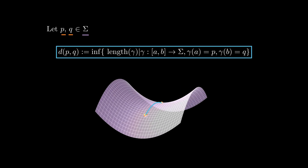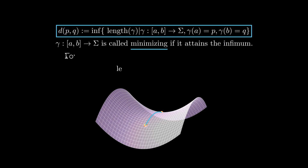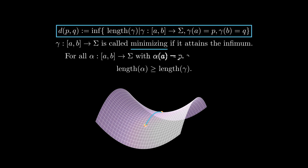If a curve attains the infimum, then it is called a minimizing curve. That is, a curve gamma in a surface is minimizing if any other curve alpha with the same endpoints is at least as long as gamma. In general, if we have two points p and q in a surface, this infimum is not necessarily attained, and if there is a minimizing curve between p and q, it is not necessarily unique.